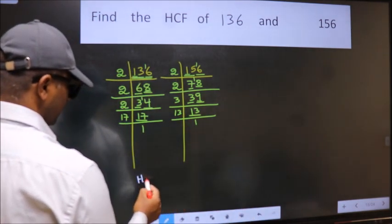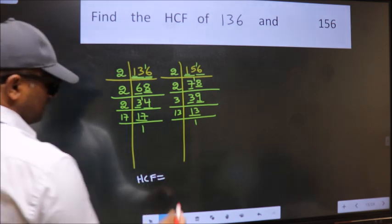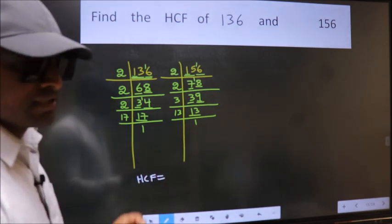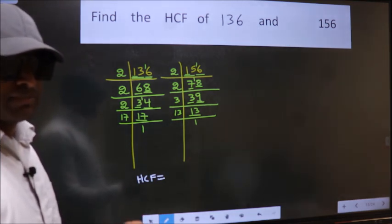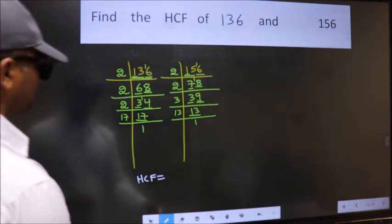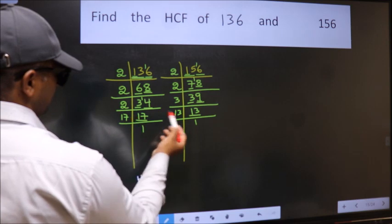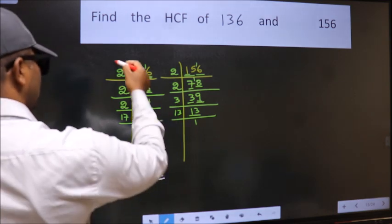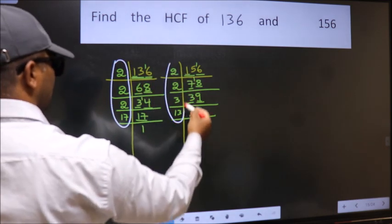Therefore our HCF is the product of the numbers which should be present in these 2 places. That is here and also here.